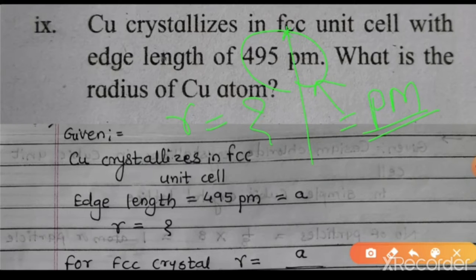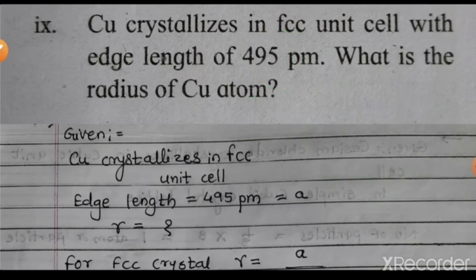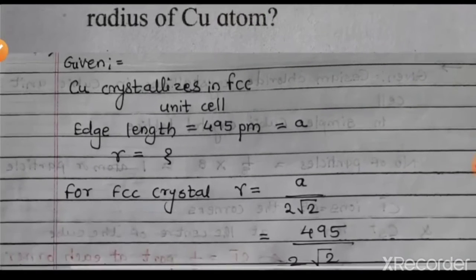For a face-centered cubic crystal lattice or unit cell, the formula to calculate the radius is r = a / (2√2). We have to use this formula to solve the numerical.